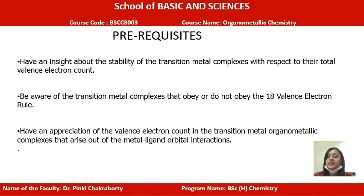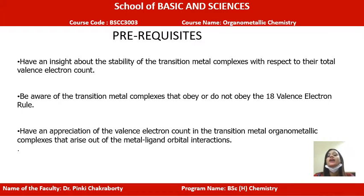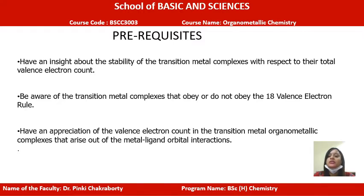What are the prerequisites that we must know before we get into the explanation of this 18 electron rule for organometallic chemistry? First, all of us should have an insight or understanding about the stability of transition metal complexes and how that stability can be related with the total valence electron count.